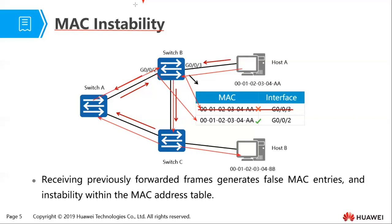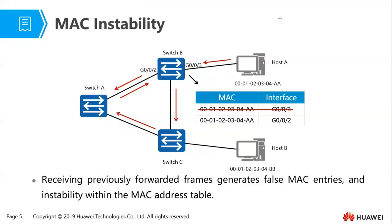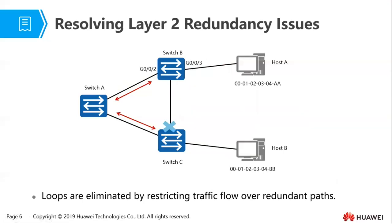Receiving previously forwarded frames generates false MAC address entries and instability within the MAC address table. To resolve broadcast storms and MAC address instability, the solution for over 20 years has always been to use STP — the Spanning Tree Protocol.